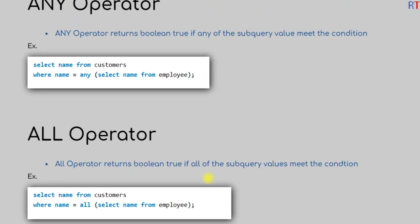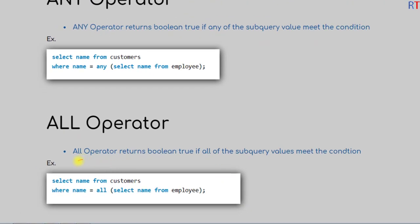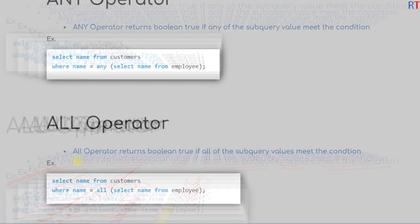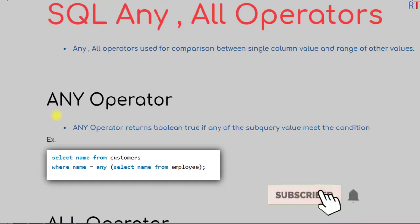The ALL operator returns boolean true if all the subquery values meet the condition. For example, we have the query: SELECT name FROM customers WHERE the name is equal to ALL along with a subquery that returns names from the employee table. So the condition is true only if the customer name equals all names in the employee table.